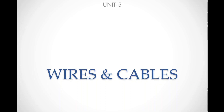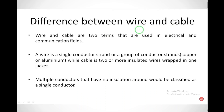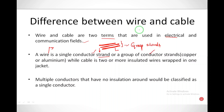Hello students, today we are going to see types of wires and cables. Let us see the difference between a wire and a cable. Wire and cable are two terms used in electrical as well as communication fields. Basically, a wire is a single conductor strand — a strand is one single conductor — or a group of conductor strands. Strands are made of copper or aluminum, which have high conductive properties.